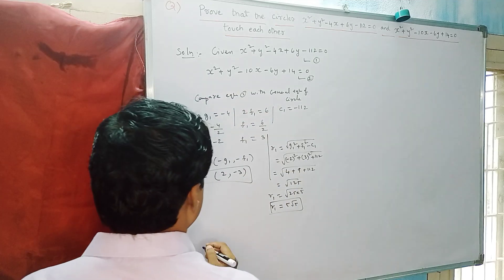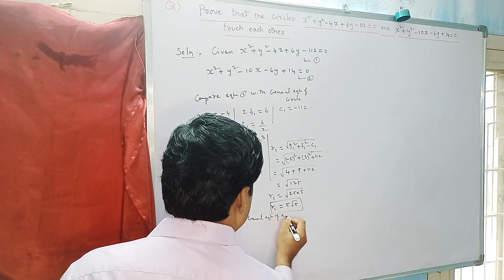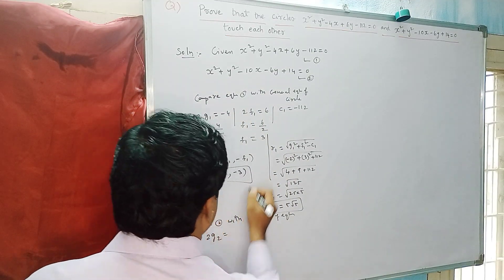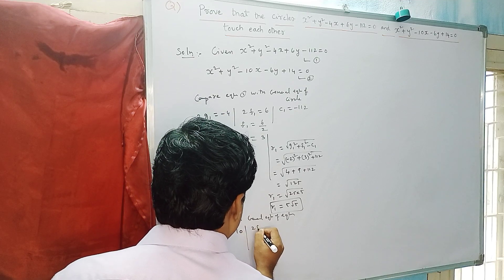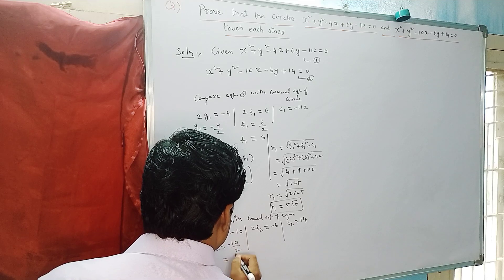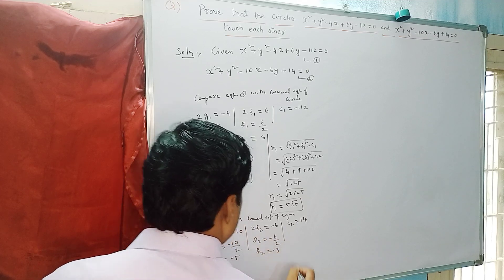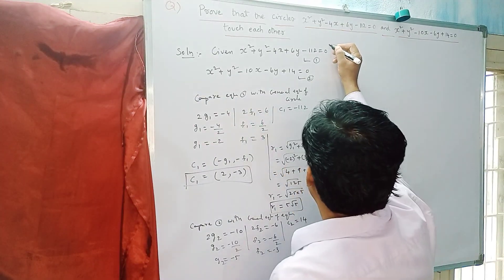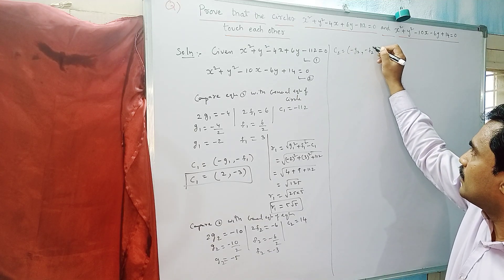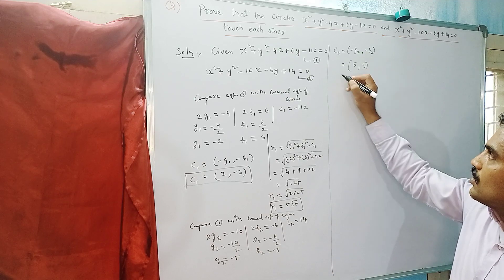Now from the second equation, compare equation 2 with the general equation of a circle to find g2, f2, and c2. We get 2g2 = -10, 2f2 = -6, and c2 = 14. So g2 = -10/2 = -5, and f2 = -6/2 = -3. The center C2 = (-g2, -f2). Since g2 = -5, -g2 = +5, and since f2 = -3, -f2 = +3. Therefore C2 = (5, 3).